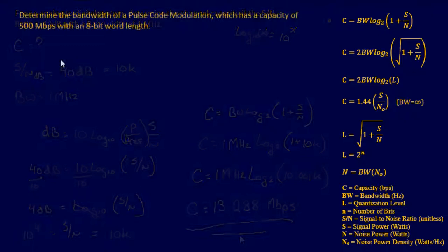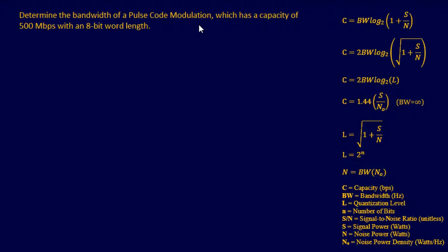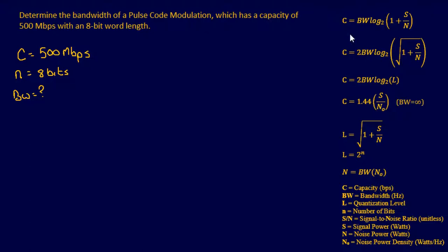For the second example, we need to determine the bandwidth for a pulse code modulation system with a capacity of 500 megabits per second and an 8-bit word length. What we know: capacity is 500 megabits per second, and n equals 8 bits. We want to find bandwidth.